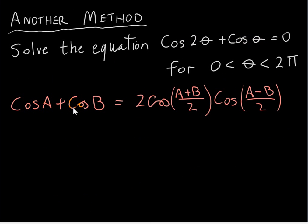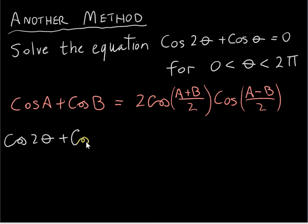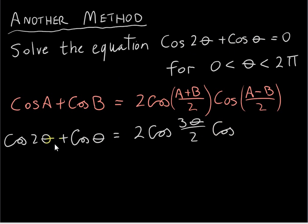In previous videos we proved that we can write the sum of cosine functions as a product of cosine functions. Comparing our expression to the identity, we can see that A = 2θ and B = θ. So we can write cos 2θ + cosθ as 2 × cos((2θ + θ)/2) × cos((2θ − θ)/2), which gives 2 × cos(3θ/2) × cos(θ/2).